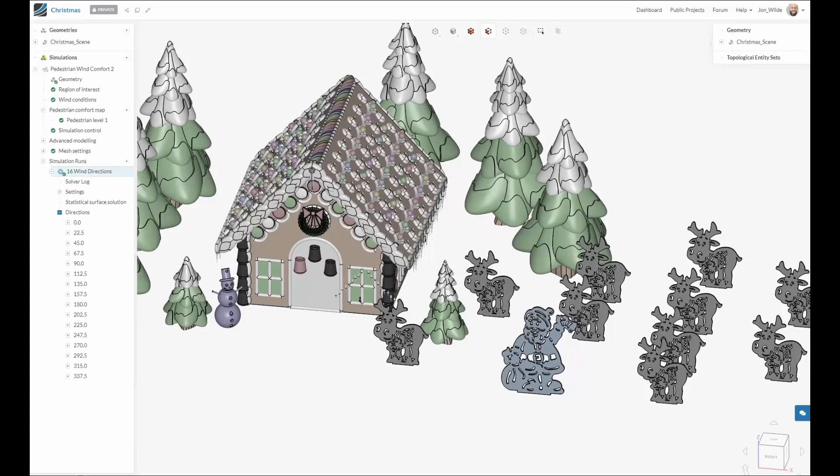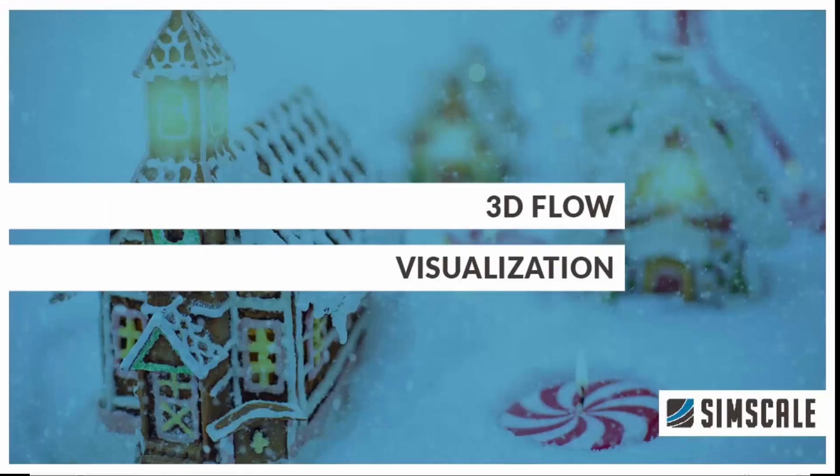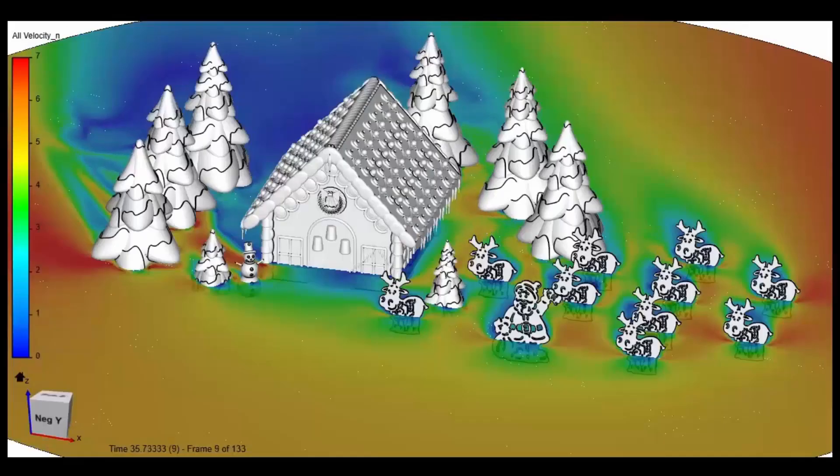So rather than looking first at the statistical results we'll take a look at just one of the directions. Here we can see the flow coming from the southeast through our reindeer and around our building.